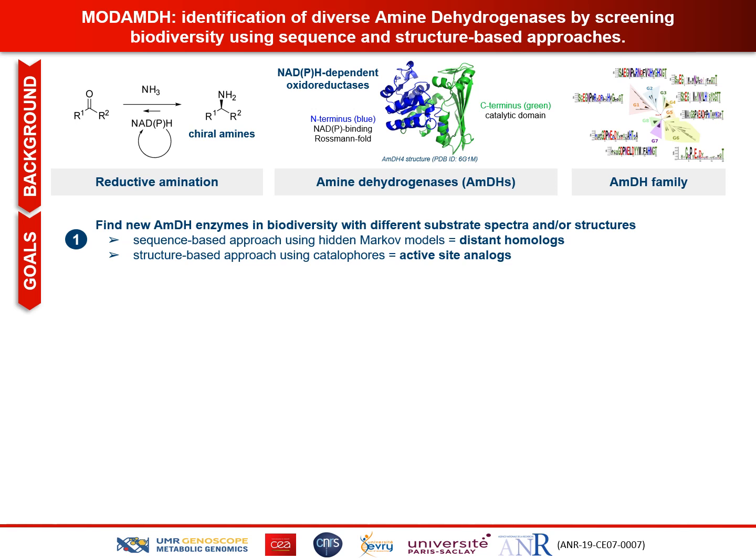In this context, the MODEMDH project was created with the main objective of finding new AMDH enzymes displaying different substrate spectra and novel structures. Compared to classic biodiversity screening using sequence homology, here we aim to find distant homologues using a dual strategy: one sequence-based approach using hidden Markov models, and one structure-based approach using katalophores.